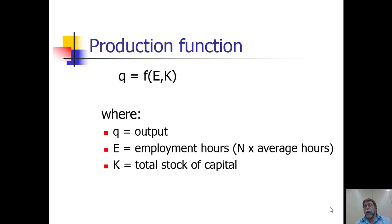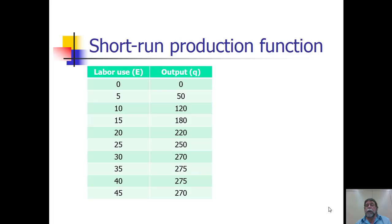More generally, we can think of E as representing the variable inputs in the production process in the short run, while K represents the inputs that are fixed. So we can define a short run production relationship between the amount of labor used and the amount of output.